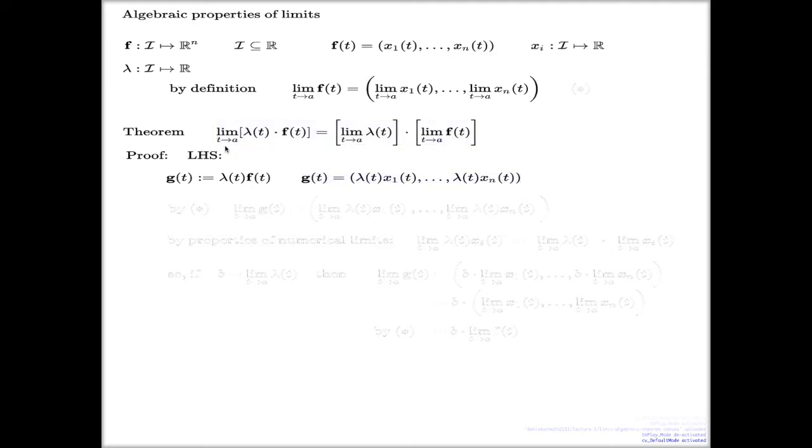Now I start arguing the left-hand side. By asterisk is the asterisk. By the definition of my limit, by asterisk, the limit of g is individual limits of every component. Here it is.